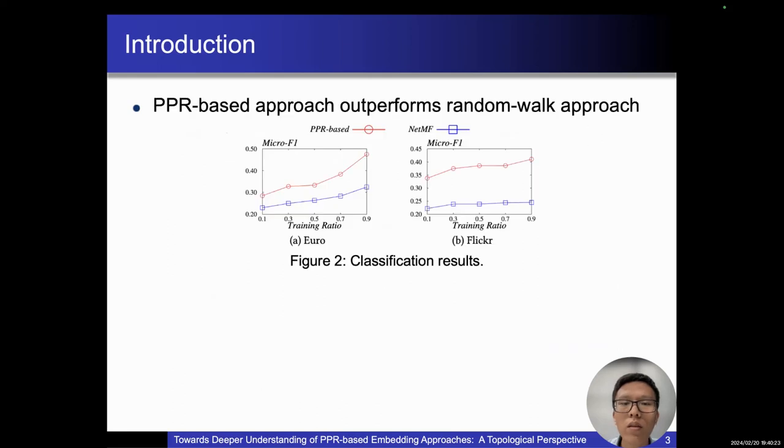PPR-based embedding approaches have achieved state-of-the-art performances on various graph mining tasks. Figure 2 shows classification results on two datasets. As we can observe, PPR-based embedding approaches outperform random walk-based approaches by a significant margin. Similar results on other graphs can be found in recent studies.